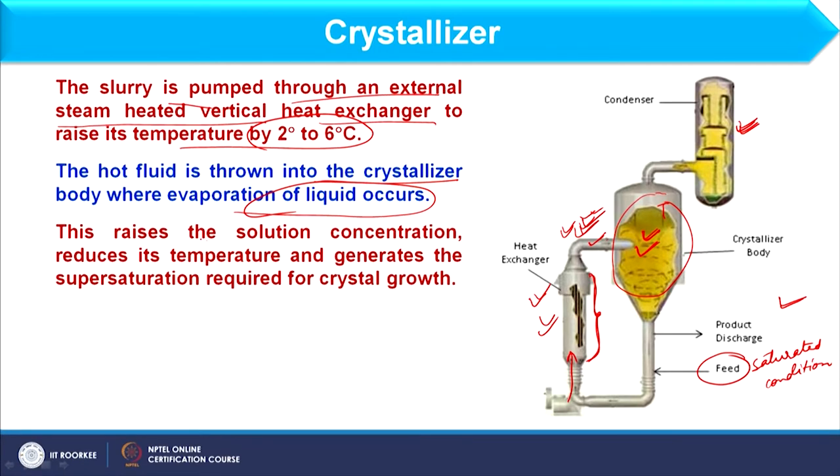When the solution is at supersaturation condition, the solution concentration increases. As temperature is reduced, generation of crystals occurs. So when the heat exchanger raises the feed temperature to saturation, and it then enters the vessel where temperature is less, some evaporation takes place, solvent is removed, solute concentration in the slurry increases to supersaturation, and crystal formation starts.